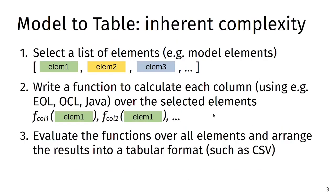I wanted to start by talking about the inherent problem of transforming part of a model — or a complete model — into a table format. There are three steps that represent the inherent complexity of this task. First, we need to select a list of elements; for instance, model elements, but also numbers or text — it doesn't matter. Each element is going to be the seed of each row in our dataset. Second, we write a function to calculate each column of our tabular dataset, using EOL, OCL, or Java, evaluated over the selected elements.